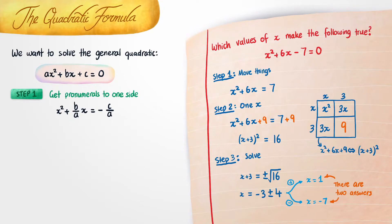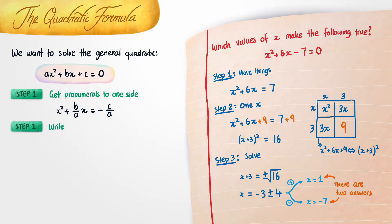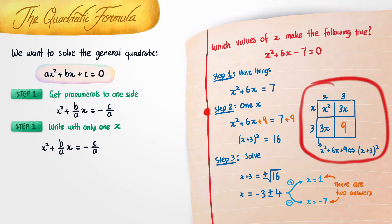Now that everything's in place and we have nothing in front of the x, we're ready to move on to step two, which requires us to get only one x as we have in the example. In our previous example, we managed to write this in terms of only one x by drawing out a square. I'm going to do the exact same thing for this particular expression — let's draw out a square and figure out what the missing sides are, and what we need to add to both sides to complete this square.